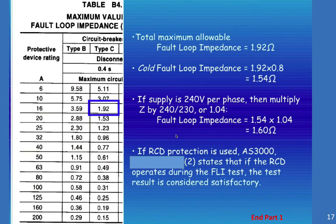If RCD protection is used, AS3000 states that if the RCD operates during the FLI test, then the test result is considered satisfactory. So if you're using a residual current device that is an earth leakage circuit breaker and it trips during the process, then we're happy with that because it has tripped. That's what's important.